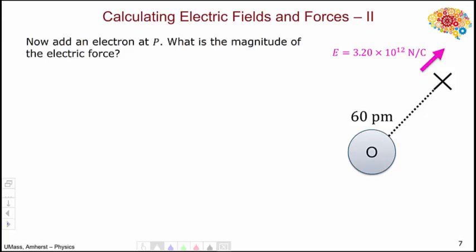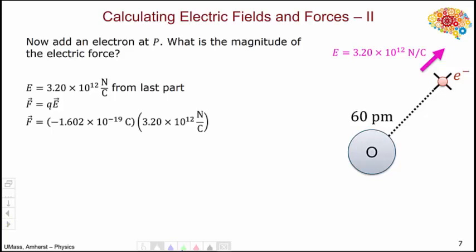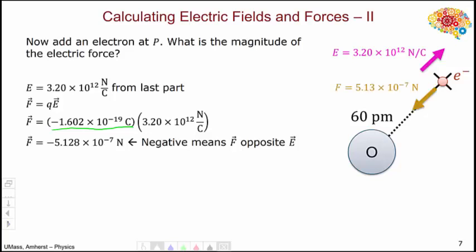Now, let's see what happens when we put an object at point P. We're going to add an electron at the point we've been talking about. We know the strength of the electric field, 3.2 times 10 to the 12th newtons per coulomb, as calculated in the last part. We know that the electron will feel a force QE, as discussed in a previous video. The charge of the electron is minus 1.602 times 10 to the minus 19 coulombs. Substituting that and our value for electric field, we get a force of minus 5.128 times 10 to the minus 7 newtons, where the negative sign means that the force is opposite the electric field.